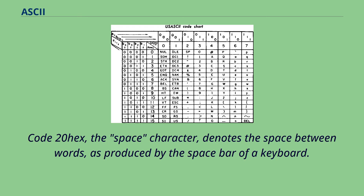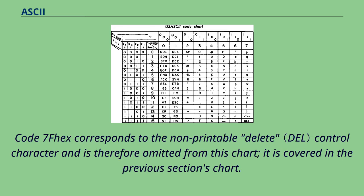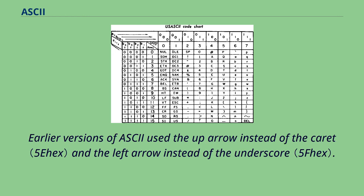Code 20 hex, the space character, denotes the space between words as produced by the spacebar of a keyboard. Since the space character is considered an invisible graphic, it is listed in the table below instead of in the previous section. Code 7F hex corresponds to the non-printable delete control character and is therefore omitted from this chart; it is covered in the previous section's chart. Earlier versions of ASCII used the up arrow instead of the caret and the left arrow instead of the underscore.